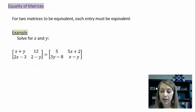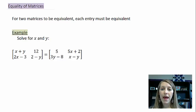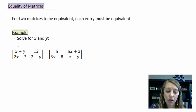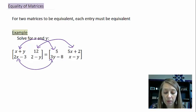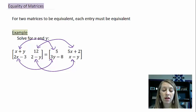Now, equality of matrices: what does it actually mean for two matrices to be equivalent? First, they must have the same dimensions. Beyond that, each corresponding entry must be the same. So in an example, the top left entry of one matrix must equal the top left of the other, and so on for every position — you set each entry equal to its counterpart.